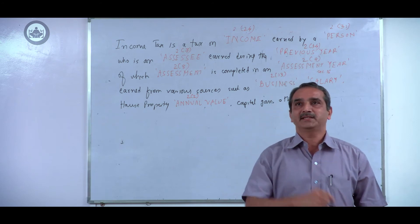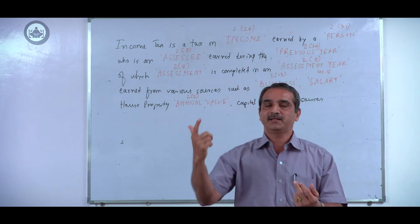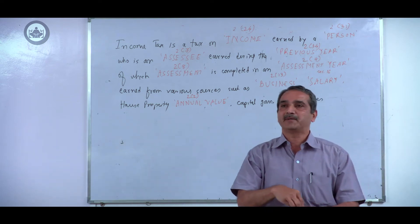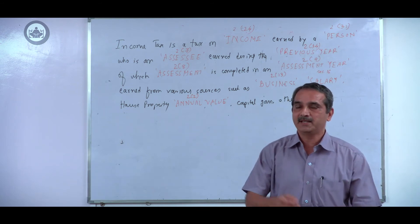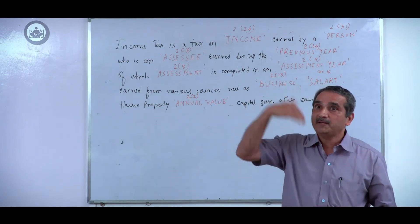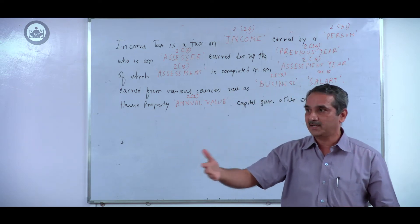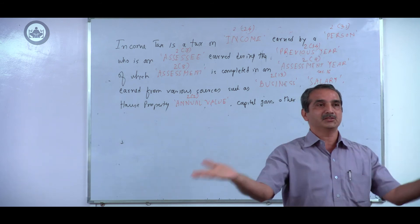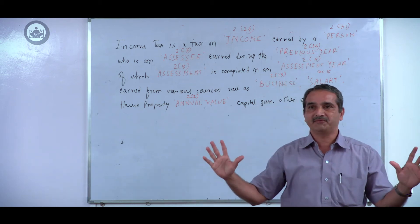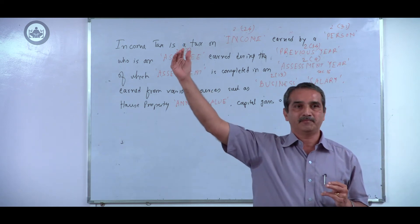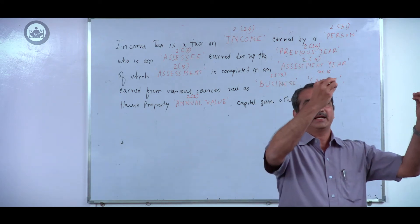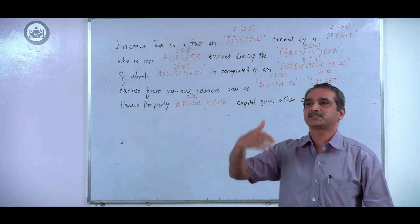Under the definition of 'person,' the categories specified are: individual, HUF, firm, company, association of persons or body of individuals, artificial juridical person, and local authority. Beyond this, we can imagine many other organizations — like a cooperative society — but a cooperative society is not a person because it is not named in the exhaustive definition. A charitable trust is also not a person; it would fall under AOP or BOI and be assessed under that category.